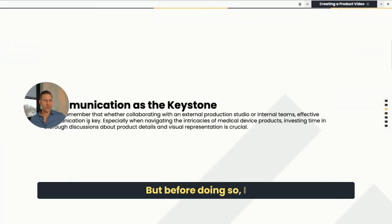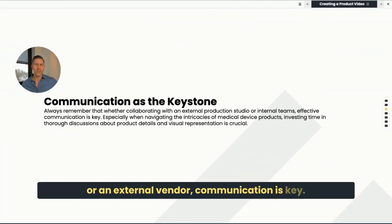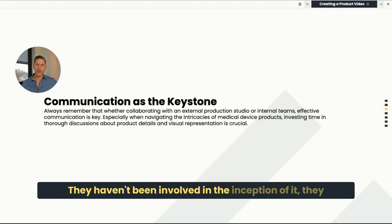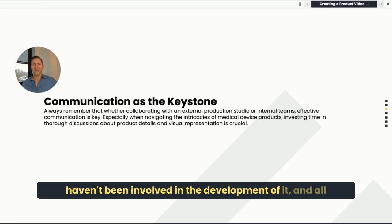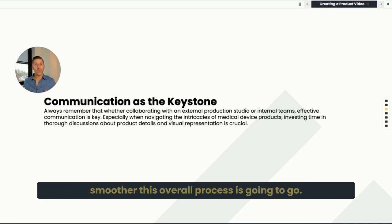Before doing so, I want to talk about communication. Whether you're working with an internal partner or an external vendor, communication is key. At the end of the day, your production partners don't know your product like you do. They haven't been involved in the inception of it, or the development of it and all of the key meetings that go along with it. So the more information that you can provide about your product and its benefits to your end user, the smoother this overall process is going to go.